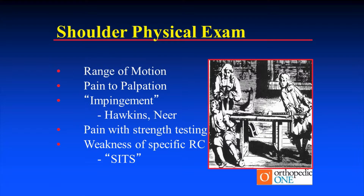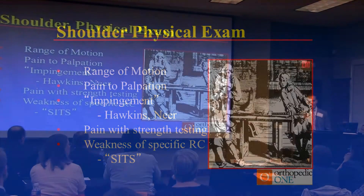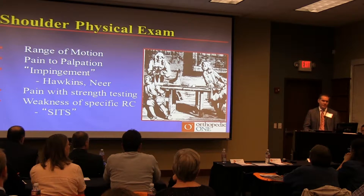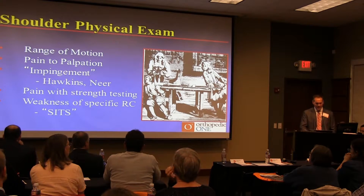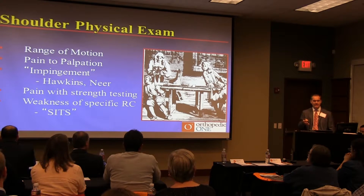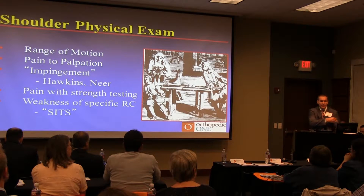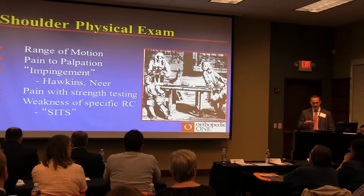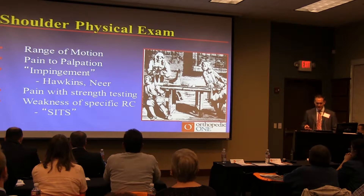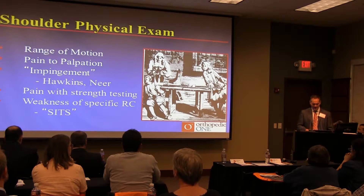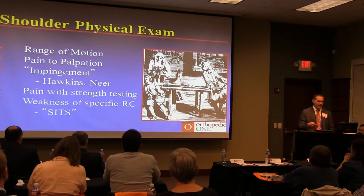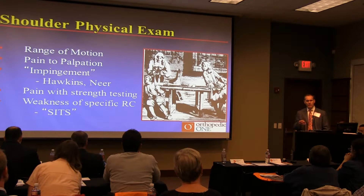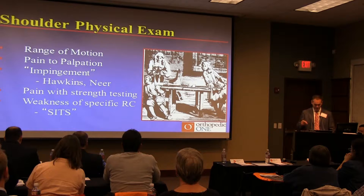On physical exam, assess their motion compared to the other side. Someone might have decent motion but significantly less than their other side — specifically abduction, external and internal rotation. Comparing rotation side-to-side while laying them down can pick up a subtle adhesive capsulitis you might otherwise miss. Range of motion, pain to palpation, classic biceps tenderness, specific impingement tests, pain with strength testing — is it good strength with pain or pain and weakness? Specific weakness of specific rotator cuffs makes the history and physical exam very important.